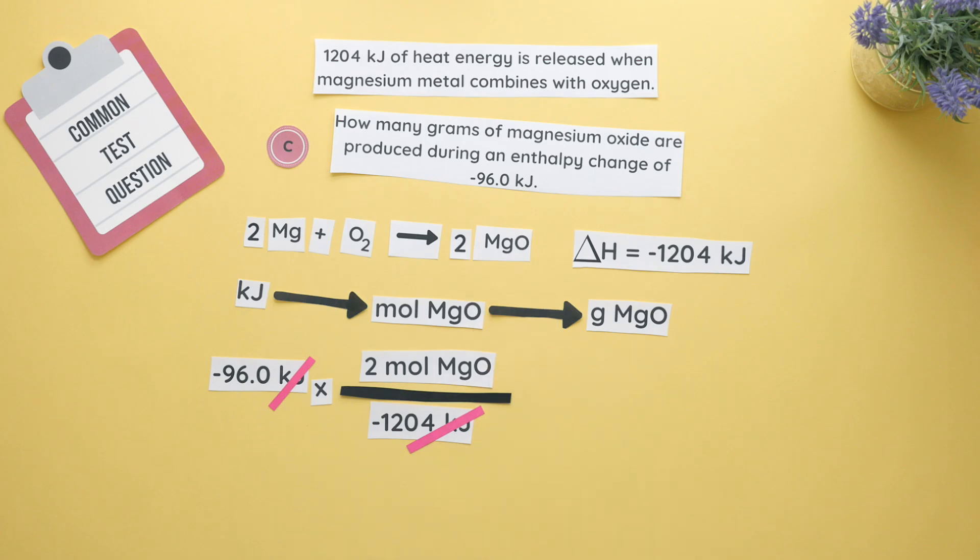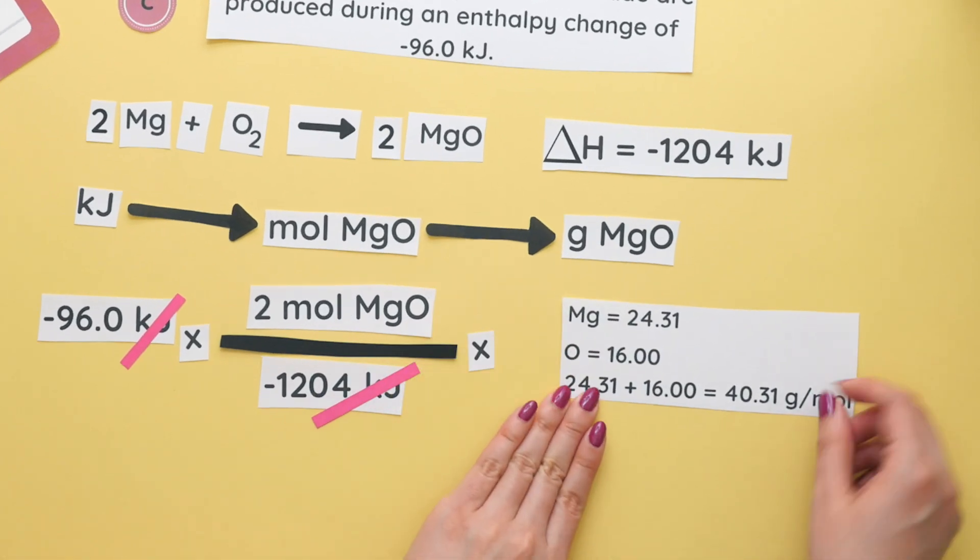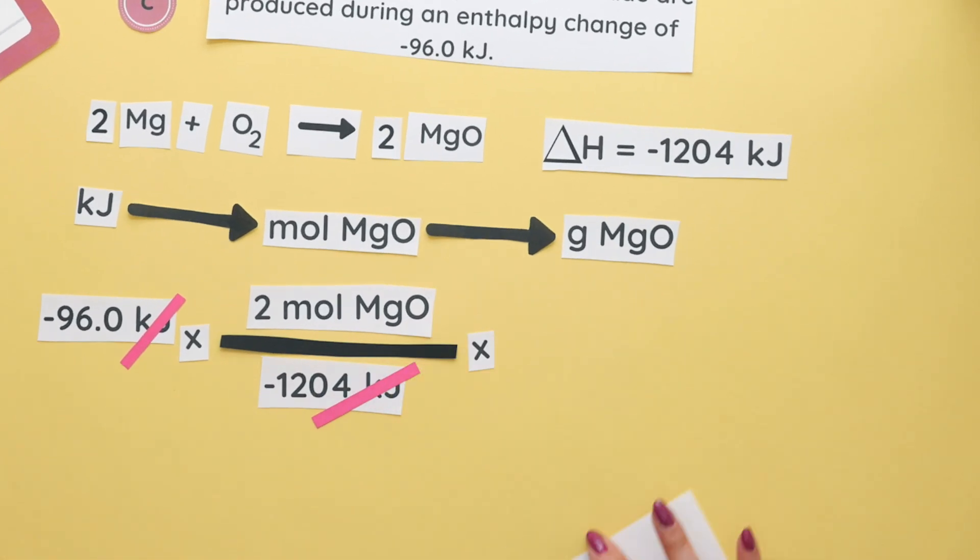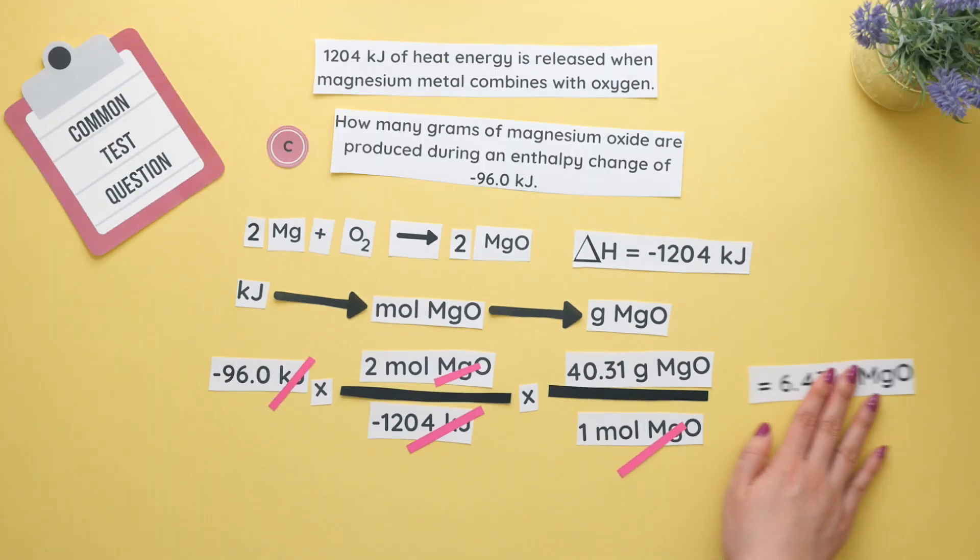Next we will convert our moles of magnesium oxide to grams so we'll use the molar mass of magnesium oxide. To find the molar mass of magnesium oxide we will add up each elements individual mass and get 40.31 grams per mole. The moles cancel and we get 6.43 grams of magnesium oxide.